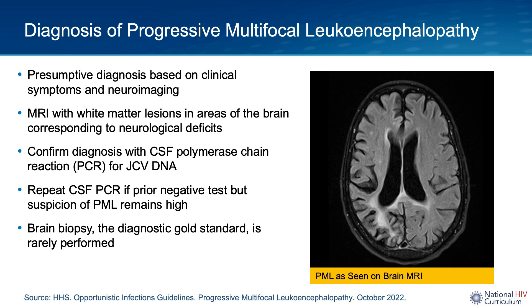A diagnosis of PML is typically made presumptively based on the clinical syndrome and neuroimaging. Patients typically exhibit slowly progressive neurological deficits, and MRI findings demonstrate distinct white matter lesions in areas of the brain corresponding to the clinical deficits. These lesions appear hyperintense on T2-weighted and FLAIR sequences, as seen in the image shown on this slide.